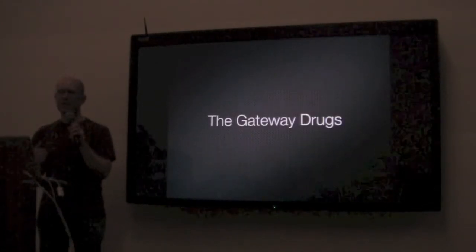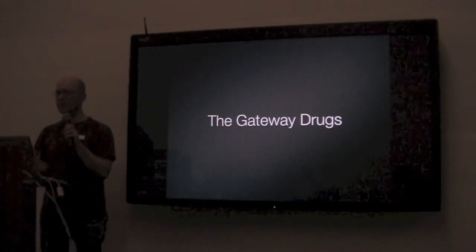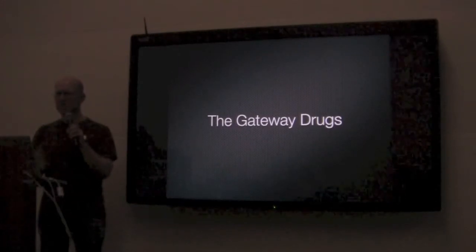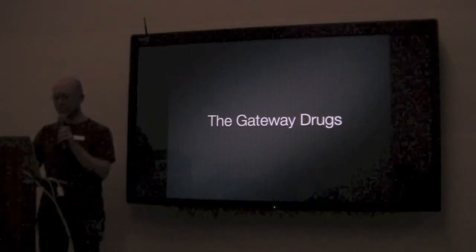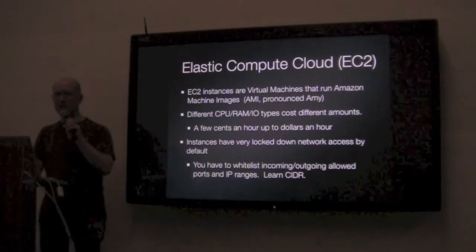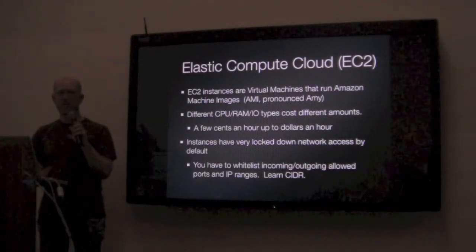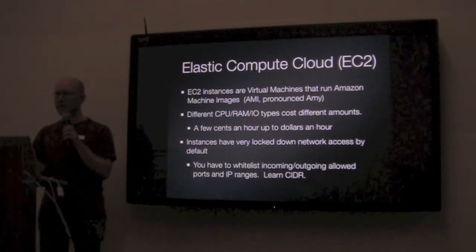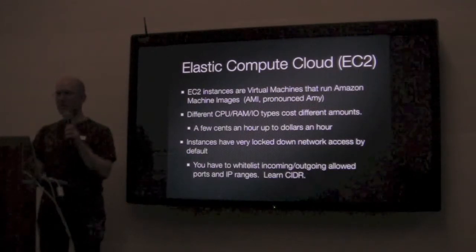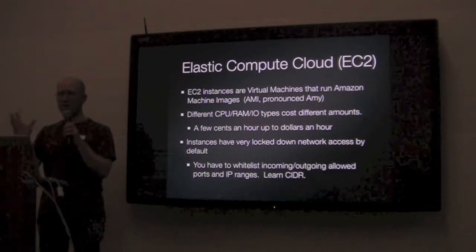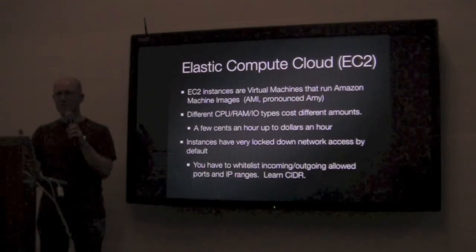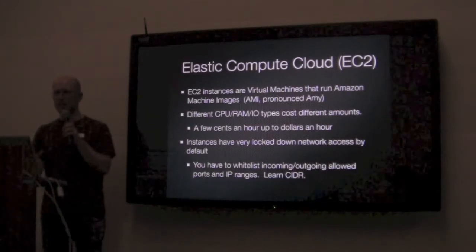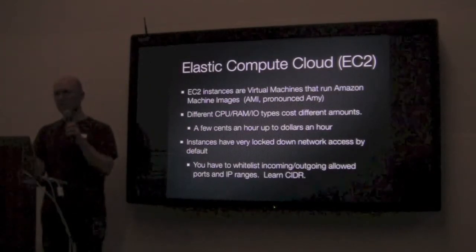Now for some gateway drugs — the AWS components that most people use, the starter set. I'd say 80% of all applications just need these services. The first is EC2, Elastic Compute Cloud — the compute part of AWS. If you want a bunch of servers in the cloud, you use EC2. They're virtual machines — not a physical machine that's yours and only yours. These are ephemeral, temporary compute resources. You use them, stop using them, and someone else can use those resources. You pay for what you need.